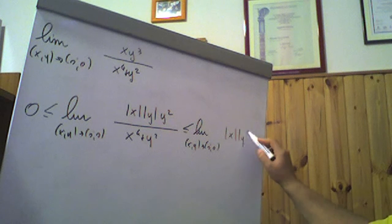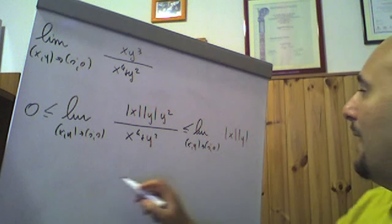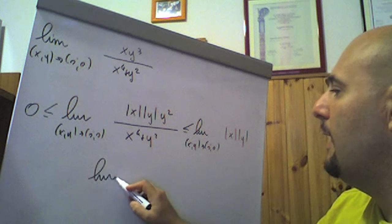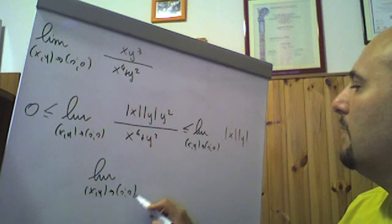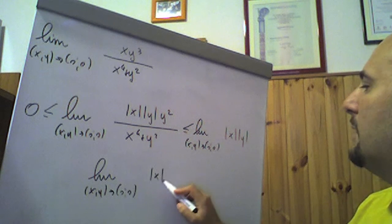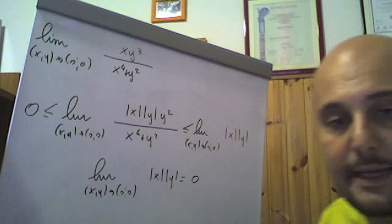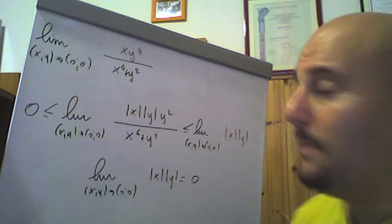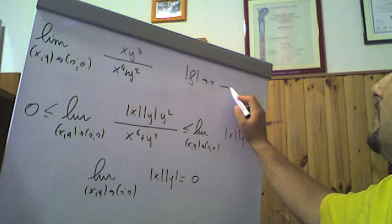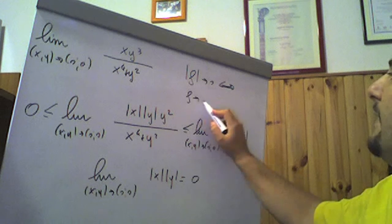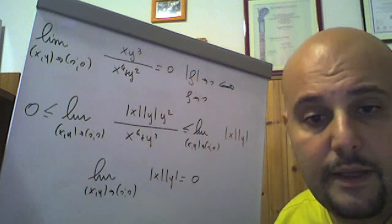So the expression is bounded by |x| · |y|. Since the limit as (x,y) → (0,0) of |x| · |y| = 0, by the Squeeze Theorem and since |f| → 0 implies f → 0, we can once again affirm with certainty that this limit equals 0.